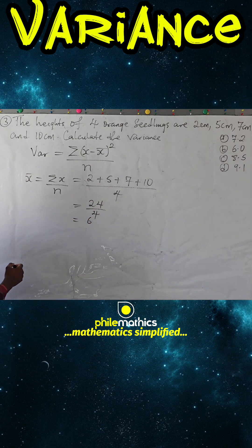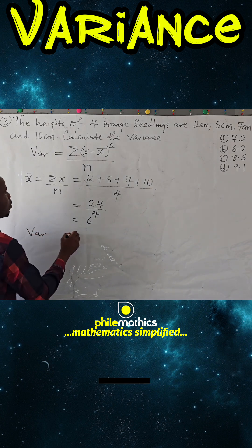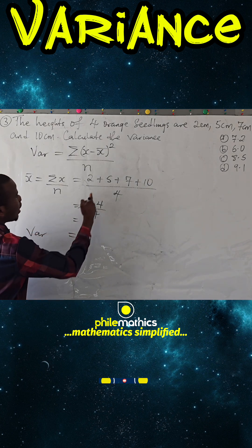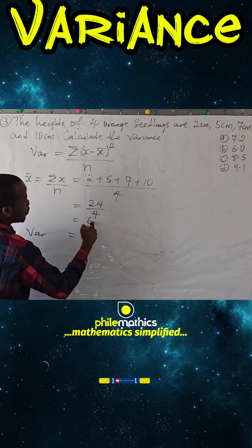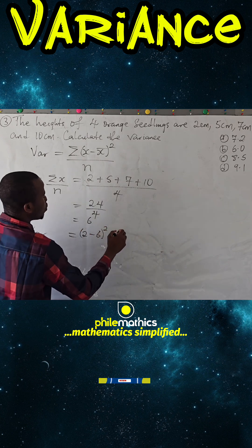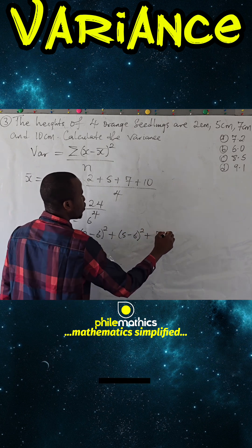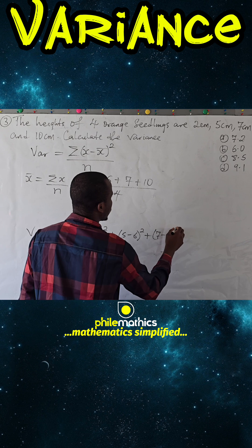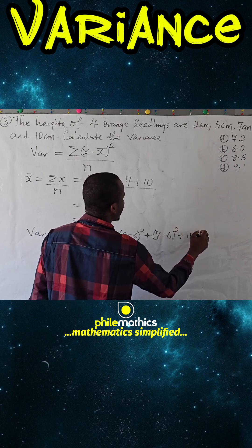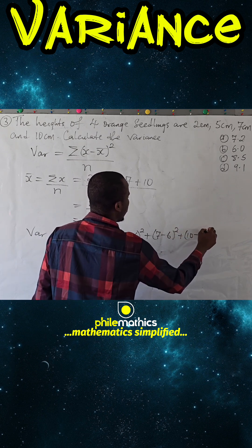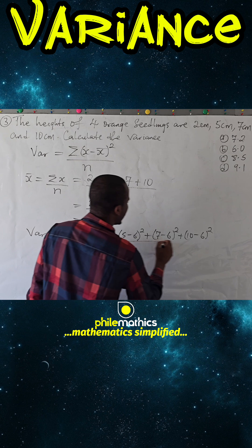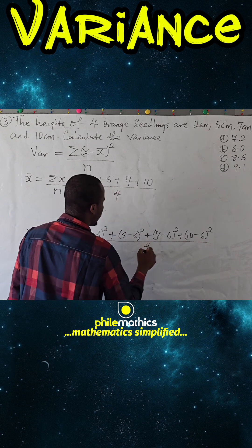So, the variance will be 2 minus 6 all squared, plus 5 minus 6 all squared, plus 7 minus 6 all squared, plus 10 minus 6 all squared, everything over 4.